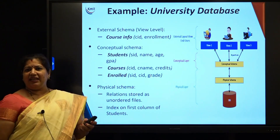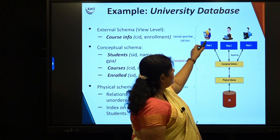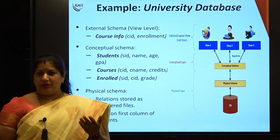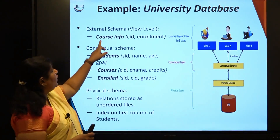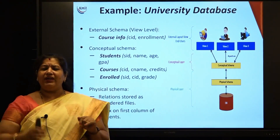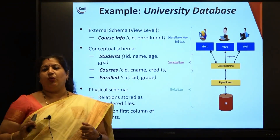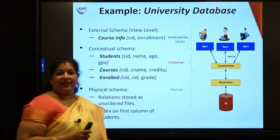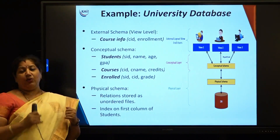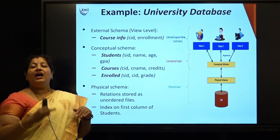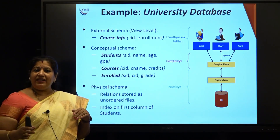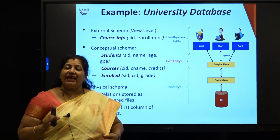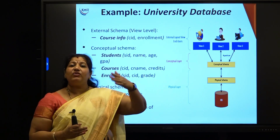Let me take up an example to explain. Look at this topmost user view. We have different kinds of users in a university database. If the user is a new student who wants to take admission, he will have access only to course information — what courses are offered, when enrollment begins, the duration, and the fees. If the user is an administrator, he will have information about how many students enrolled. If it is the examination branch, they see how many students cleared the course and what CGPA they earned. So at the user level, every user has access only to the data they are supposed to access.